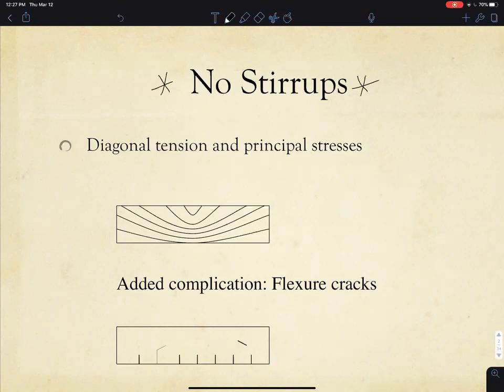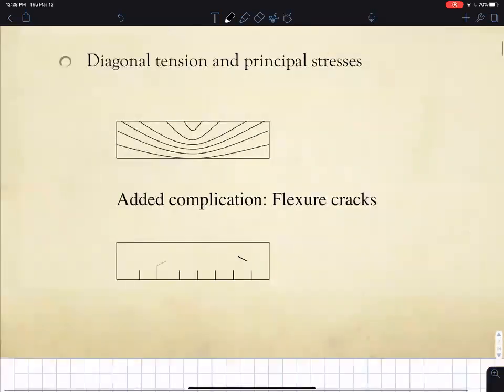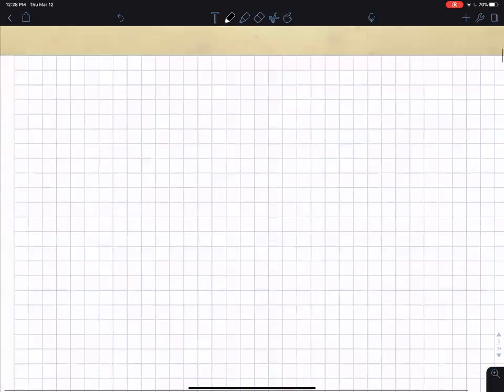The reason we're going to do that is so we can apply everything we know from mechanics of materials about homogeneous isotropic materials, just regular beams. What you should have learned in an elementary beam theory class, like mechanics of materials.